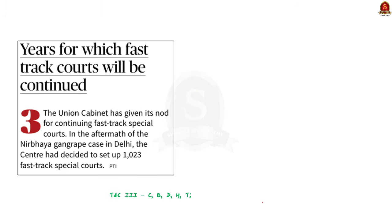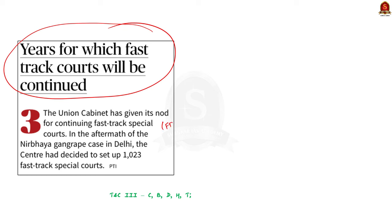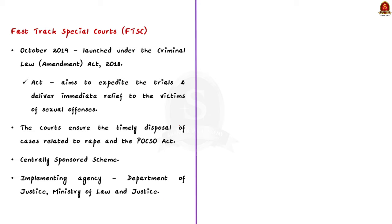Look at this news article. Yesterday the Union Cabinet approved the continuation of the Fast Track Special Court Scheme or FTSC Scheme. The scheme has been extended till March 31, 2026. Let us understand some points about the FTSC Scheme. The FTSC Scheme was launched in October 2019 and was created under the Criminal Law Amendment Act 2018. This particular act was brought to expedite the trial of cases related to sexual offences.